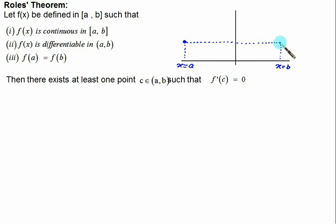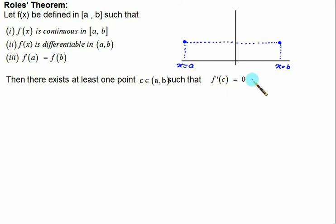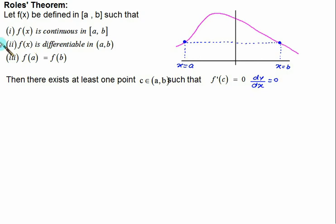If these conditions are satisfied and the function is continuous, then there exists at least one point c in (a, b) such that the derivative at c equals zero. That means there must be a maxima or minima at point c, i.e., dy/dx = 0. So if we have a curve with a maxima somewhere, at the peak point the slope must equal zero — that is dy/dx = 0. This is what Rolle's Theorem states.